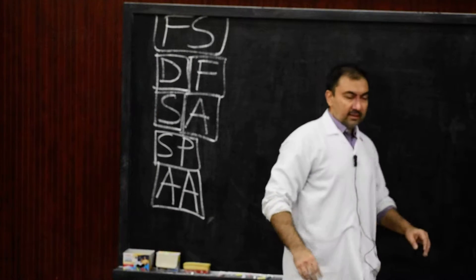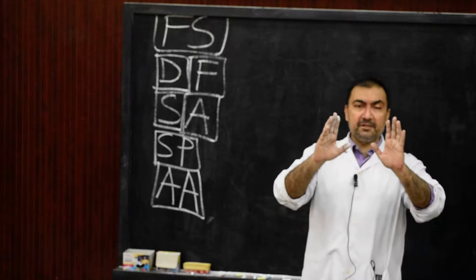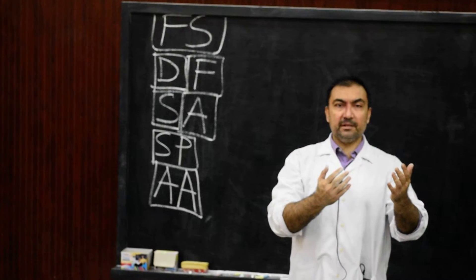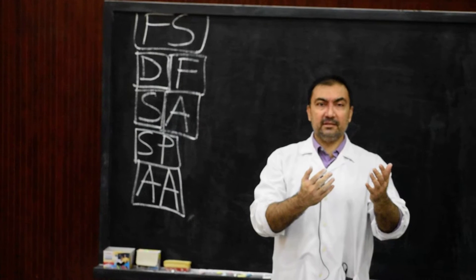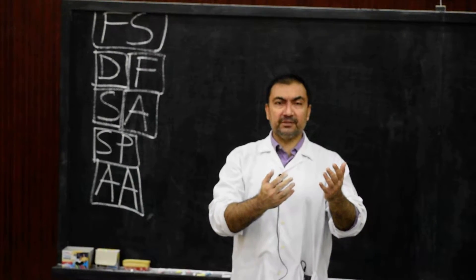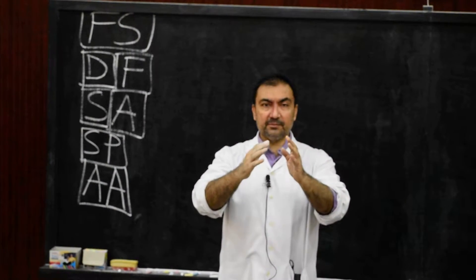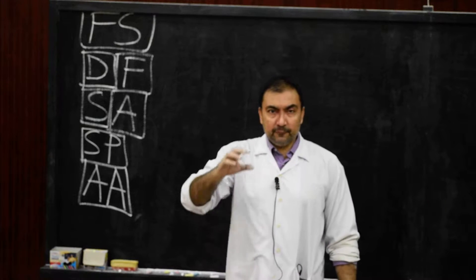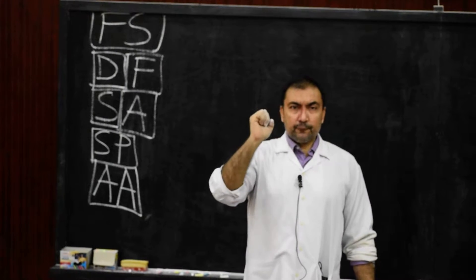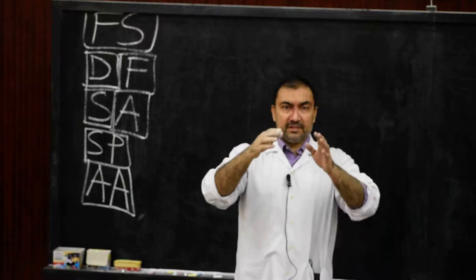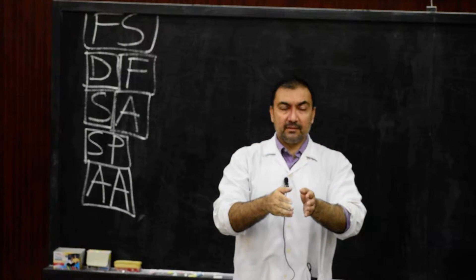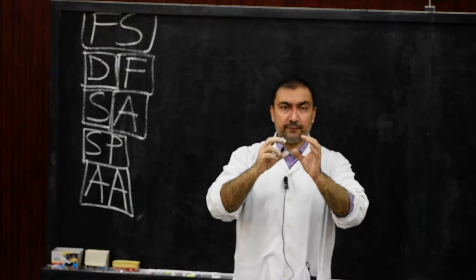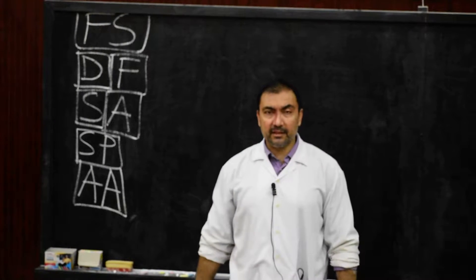The definition and formation of femoral sheath: it is a funnel-shaped fascial sheath which will cover the upper 3 to 4 centimeters of the femoral vessels beneath the inguinal ligament.